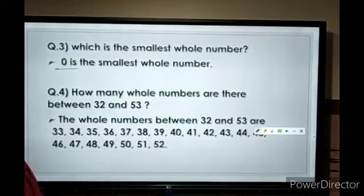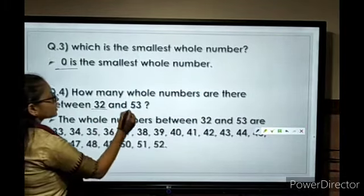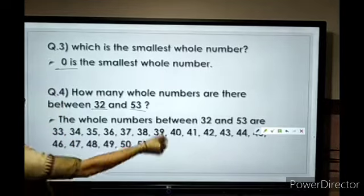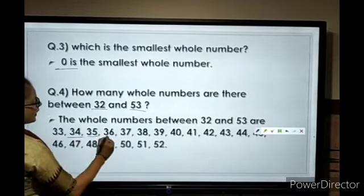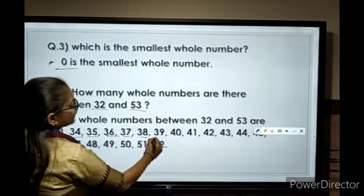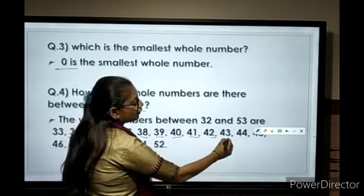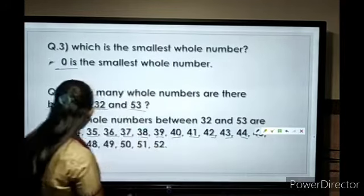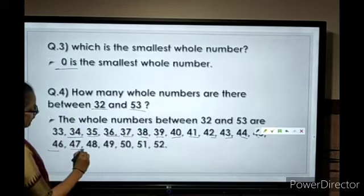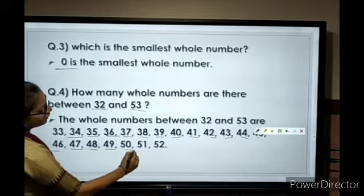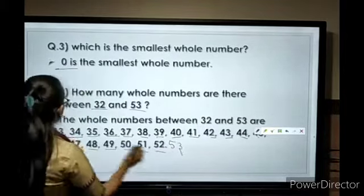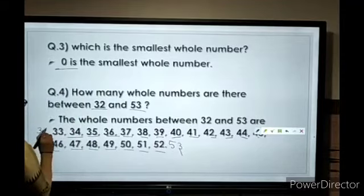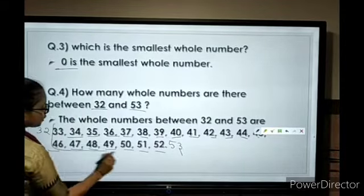How many whole numbers are there between 32 and 53? Between 32 and 53, we can count: 33, 34, 35, 36, 37, 38, 39, 40, 41, 42, 43, 44, 45, 46, 47, 48, 49, 50, 51, 52. Between 32 and 53, these are all the whole numbers.